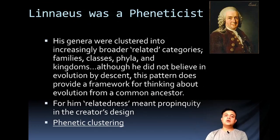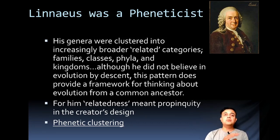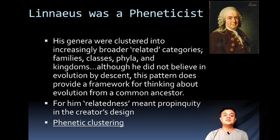Linnaeus is a good example of a pheneticist — someone working with phenetic systems. He was the Swedish father of taxonomy. His genera were clustered into increasingly broader related categories: families, classes, phyla, and kingdoms. Although he didn't believe in evolution by descent, this pattern does provide a framework for thinking about evolution from a common ancestor. Linnaeus preceded Darwin — he was in the 18th century while Darwin was in the 19th.